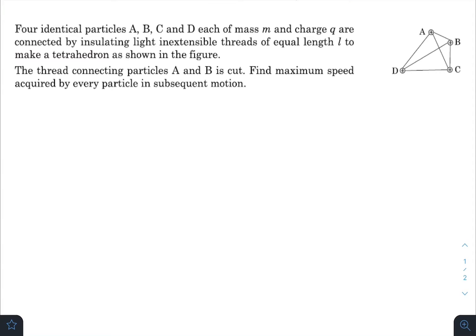Maximum speed acquired by every particle. First let us think one concept: that the total energy is conserved. Maximum speed represents maximum kinetic energy of the whole system, or maximum kinetic energy of each particle. So the potential energy of the whole system must be minimum at that instant.